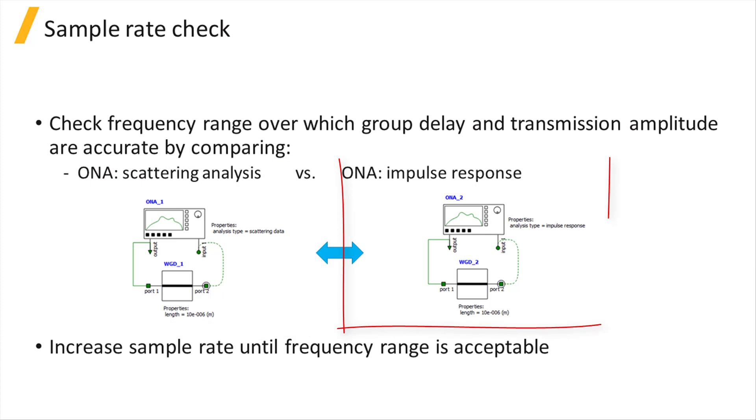Next, connect your element to an ONA with the Analysis Type set to Impulse Response. Run the simulation and compare the plots of the group delay and transmission.